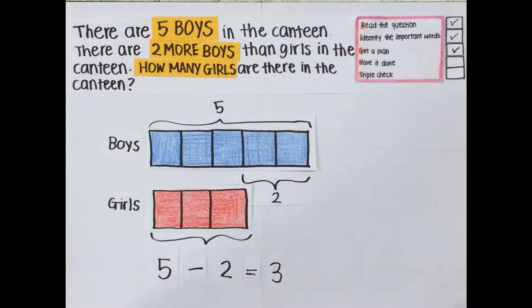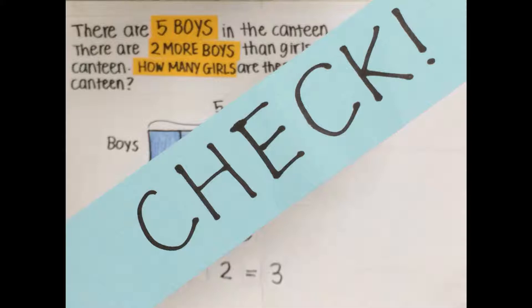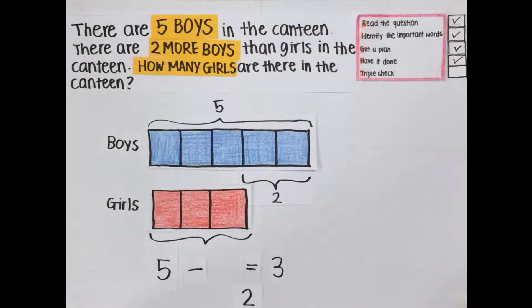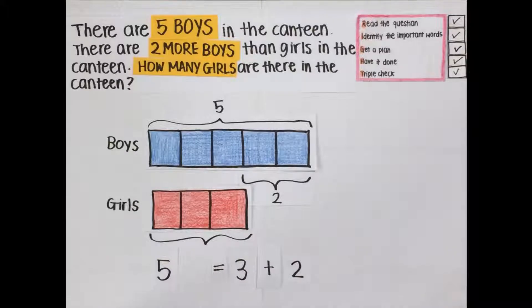We are now ready to check our answer. By taking our answer of 3 girls, we add 2 to check if the number of boys is 5. Since we do get back 5, therefore our answer is correct.